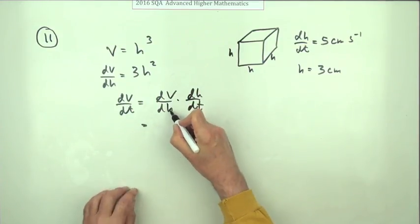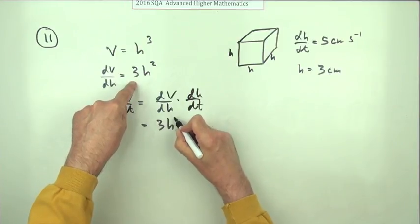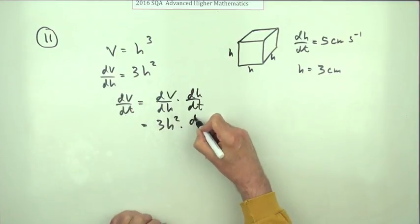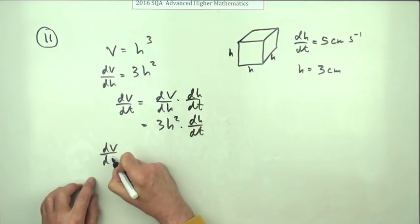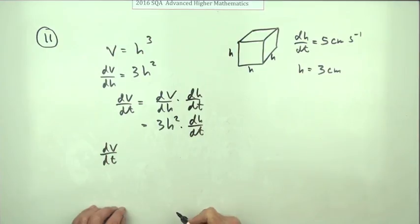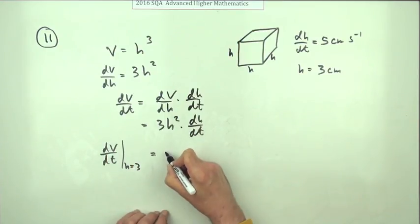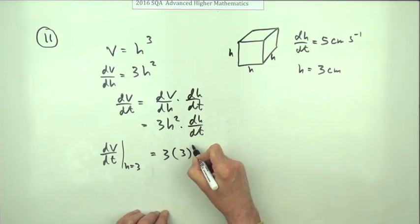So that would just be equal to 3h squared times dh/dt. If you want to evaluate when h is 3, if that's to get evaluated at h equals 3, that's going to be 3 times h is 3.